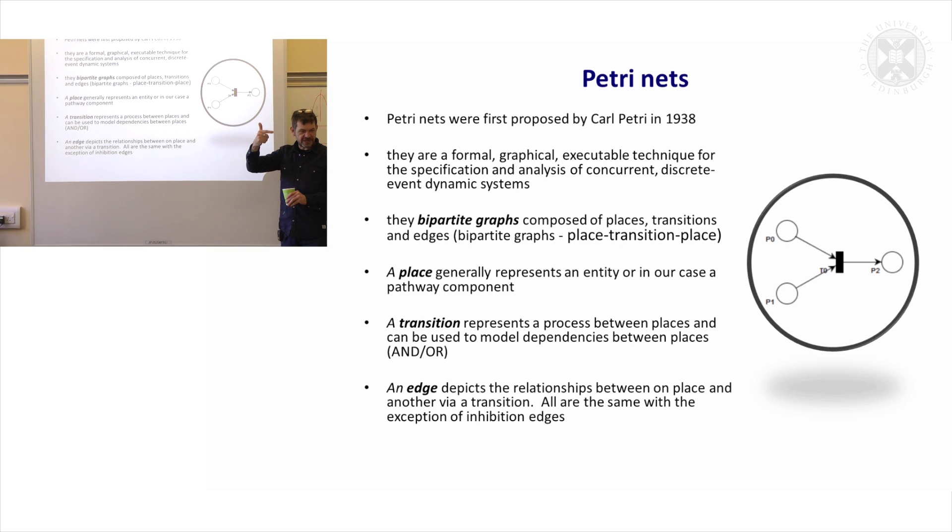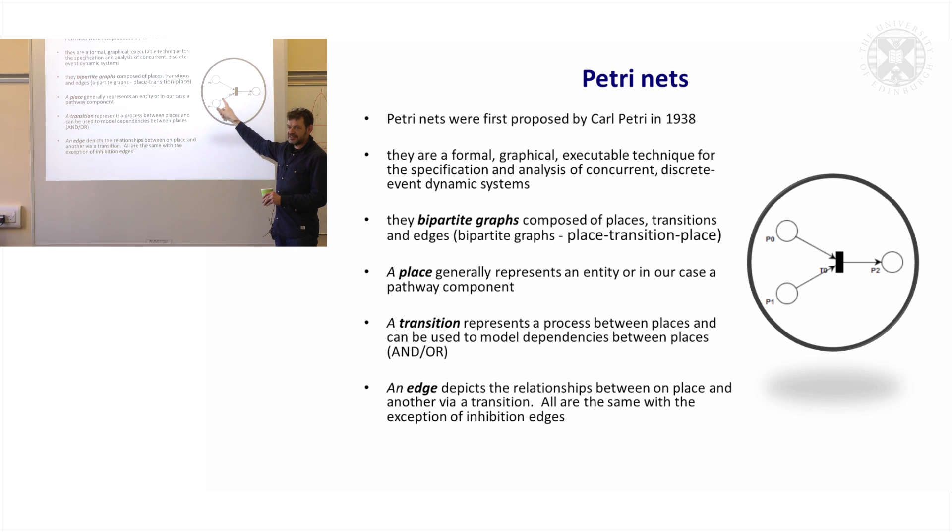Now, if you remember back to our notation system, we define places as components, i.e. proteins, genes, things which are physical entities and we defined transitions or all our processes were called transitions. So there is a direct mapping between what we have just drawn and this idea that there is places and transitions.